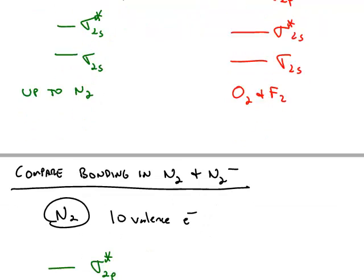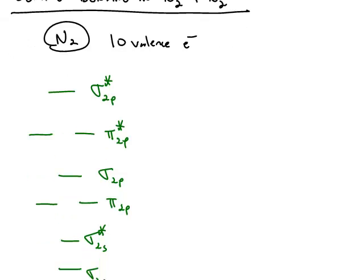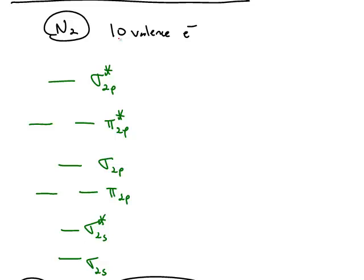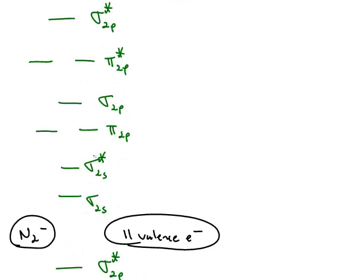And we're going to use this to answer a question such as how does the bonding compare in diatomic nitrogen and diatomic nitrogen with the negative 1 charge. The picture that I'm using starts at sigma 2s, which means we're just counting valence electrons. And diatomic nitrogen will have 10 valence electrons.